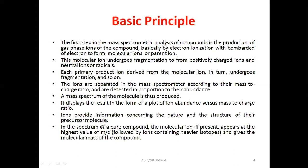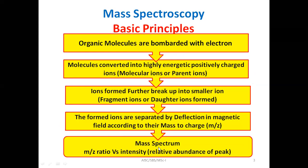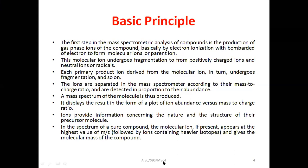These ions provide information concerning the nature and structure of their precursor molecule. In the mass spectrum of a pure compound, the molecular ion appears at the highest value of M/Z, followed by ions containing heavier isotopes, and gives the molecular mass of the compound. So the highest mass in your compound corresponds to the molecular ion mass. If asked about the basic principle of mass spectrometry, you write the flow sheet and explain the theory accordingly.